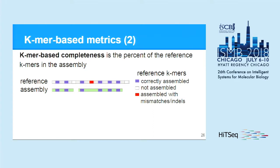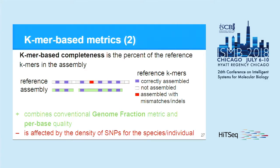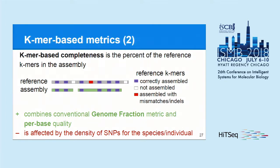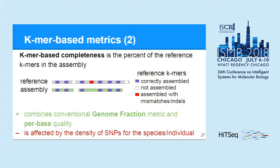K-mer based completeness is simply the percent of reference K-mers present in the assembly. Note that some K-mers may be missing because they are located in unassembled regions, and some may be missing because of mismatches or indels. So this metric combines two insights: genome fraction, which is the percent of assembled genome, and per-base quality — useful if you want to see both parameters as a single number. A drawback of this metric is that it is affected by the density of SNPs for the particular species and individual, which can be partially addressed by choosing a proper K-mer size.